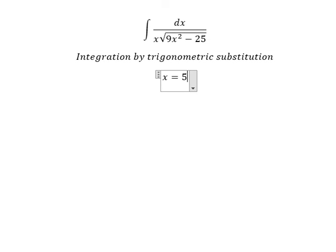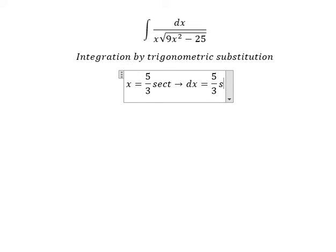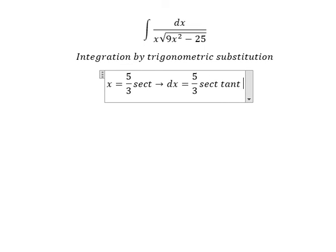I will put x equal to 5 over 3 secant of t. Later we take the derivative of both sides and we have dx equals 5 over 3 secant of t tangent t dt. So why do we need to use this substitution?